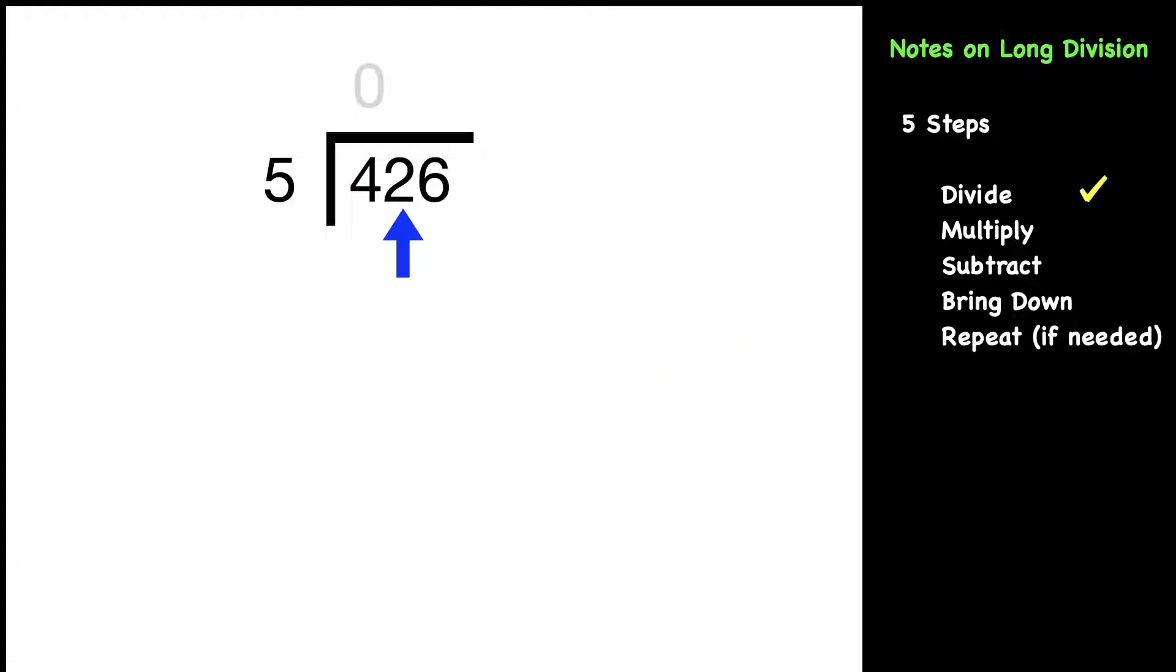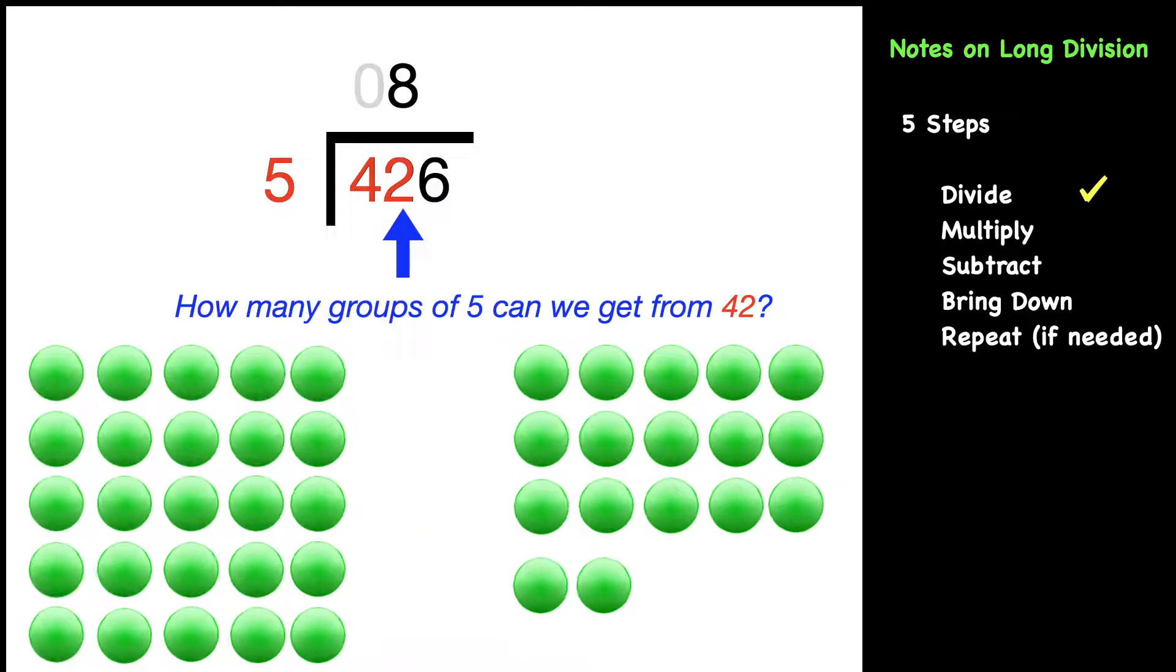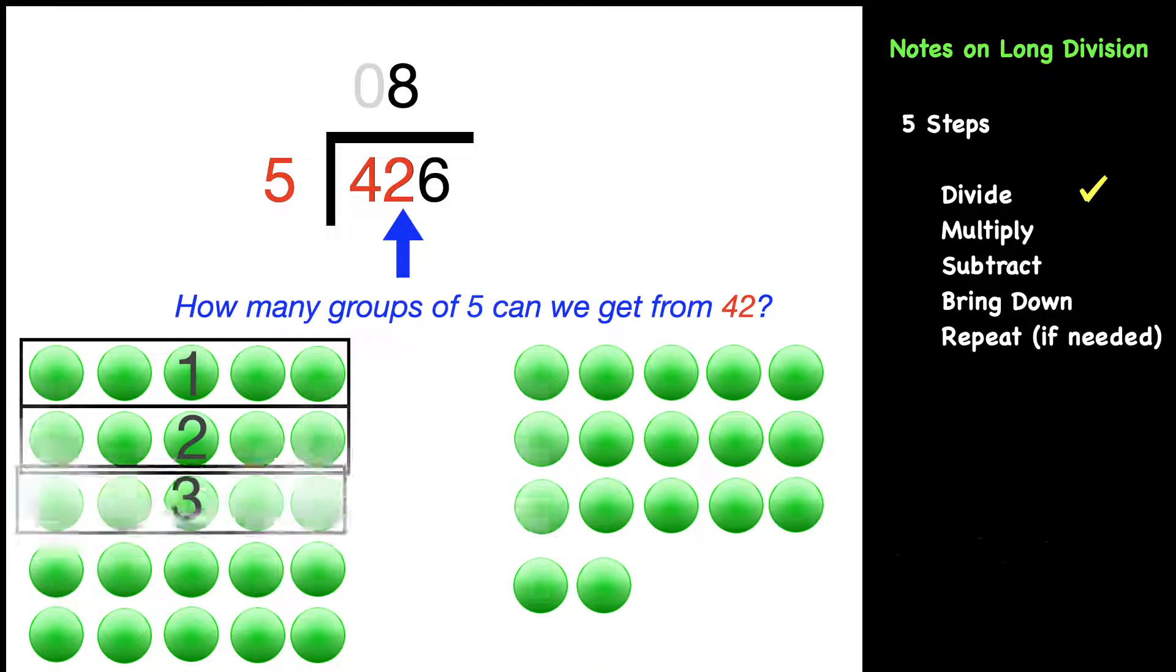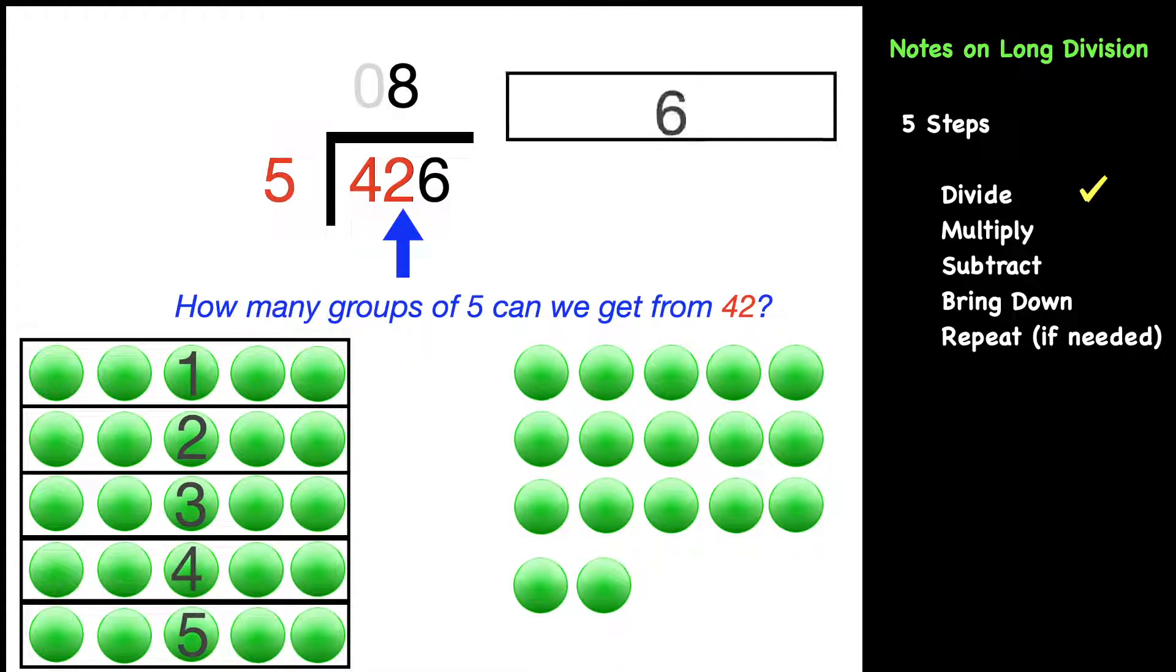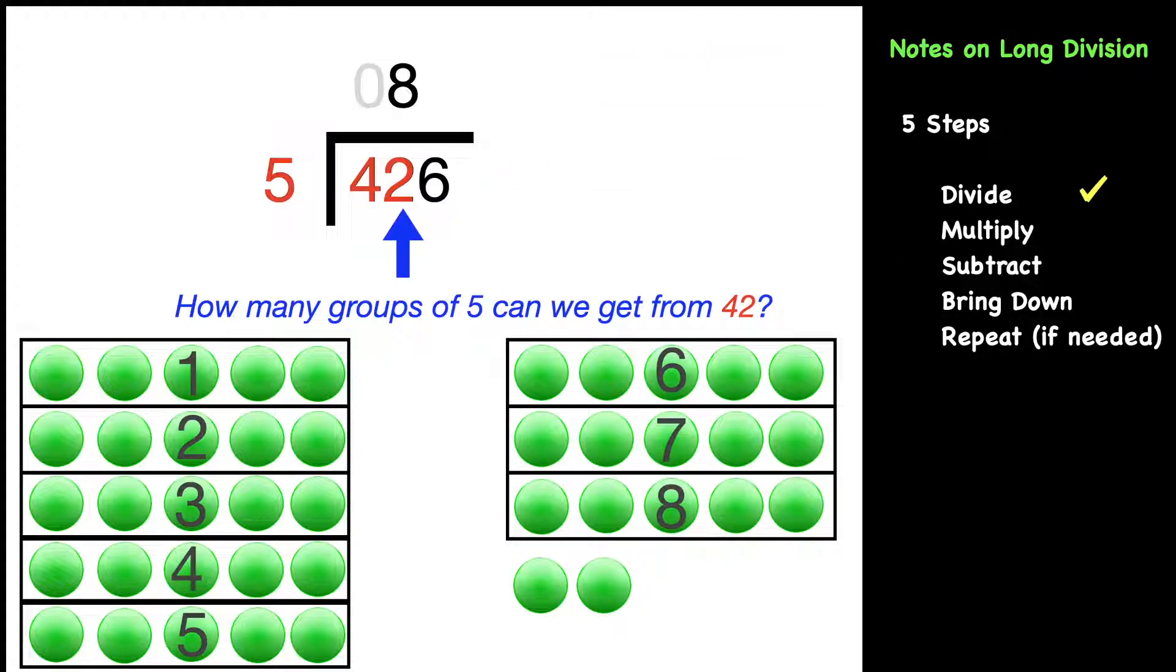So digit by digit. Now we go over to the two, but we're really looking at the 42. So ask yourself, how many groups of five can we get from 42? Well, we definitely can get groups of five from that, and that's eight. Let me show you why. We had 42 Skittles, right? We could get one group, two, three, four, five, six, seven, total of eight groups of five. And we also have two left over that we'll look at in a second.